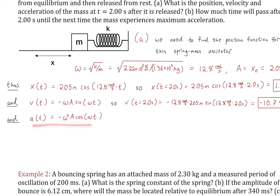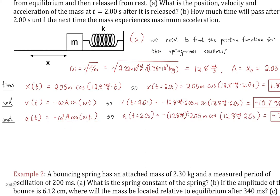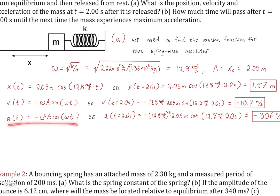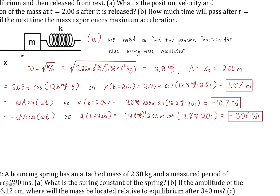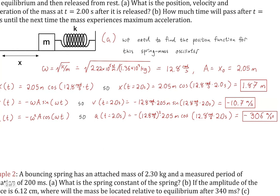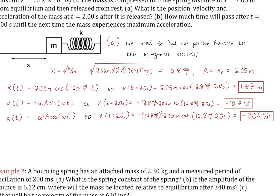For acceleration, using a(t) = −ω²A cos(ωt), plugging in t = 2 s gives approximately −306 m/s². This is a large value because we're very close to maximum compression, near where maximum acceleration occurs. That's how you apply these three equations: just copy down the equation, identify ω and A, and plug in the time.